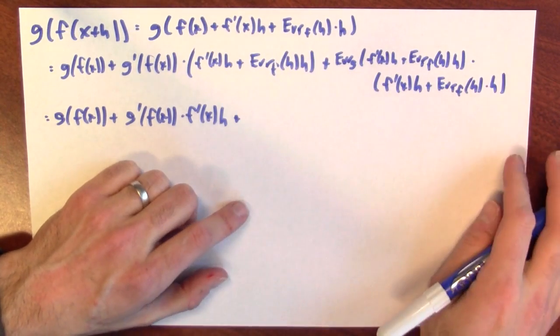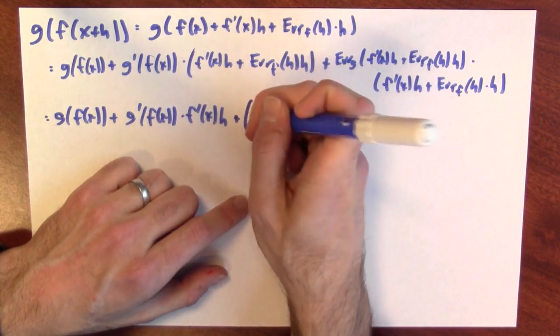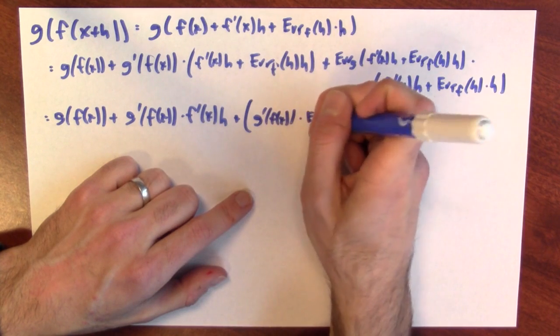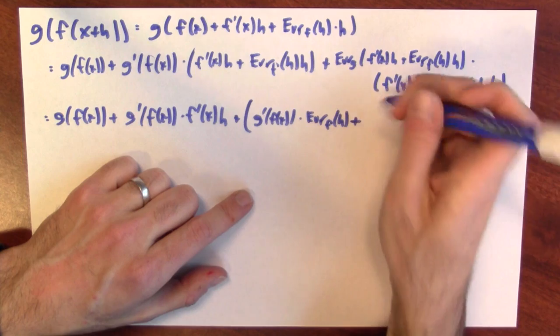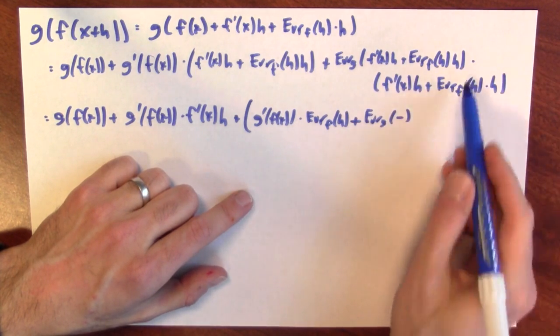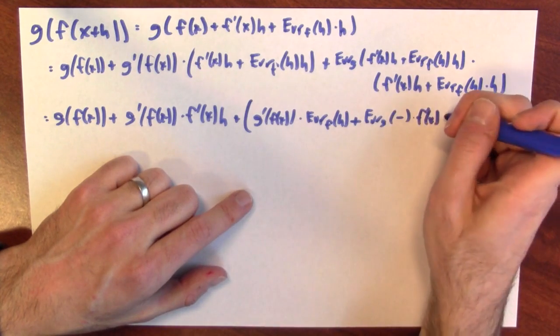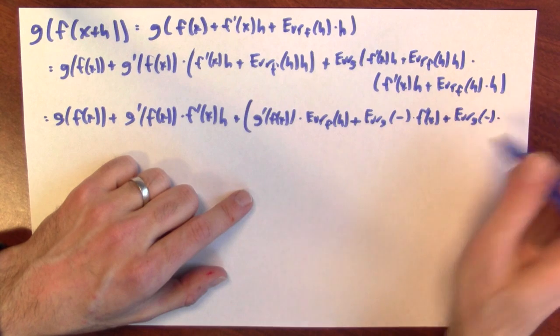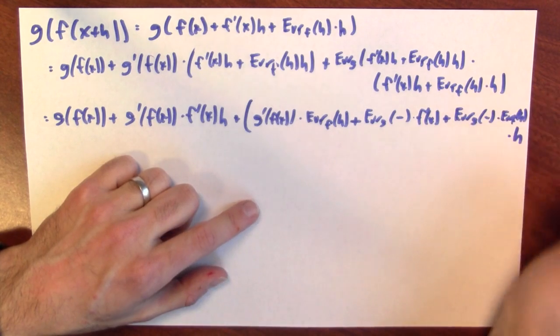Plus, I've got a ton of error terms now. All those error terms have an h. So I'm going to collect all the h's at the end. The first error term is g prime of f of x, this term here, times the error of f at h. The next one's plus the error of g at this complicated quantity. I'm just going to abbreviate hyphen times f prime of x times h, but I'm collecting all the h's at the end. Plus the error term for g at that complicated quantity times the error for f at h, and all of this is times h.